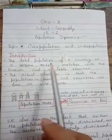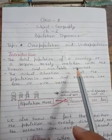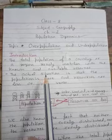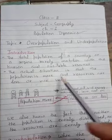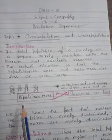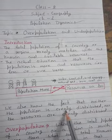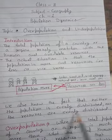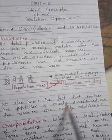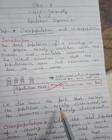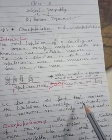This is your introduction: the total population of a country or region rarely matches with the known and available resources. The actual situation is that population is more and resources are less, or population is less and resources are more. Neither the population nor the resources are evenly distributed.